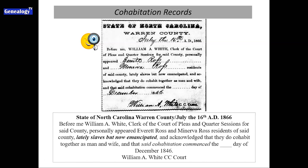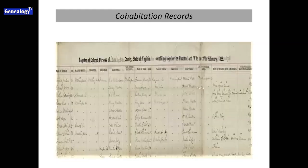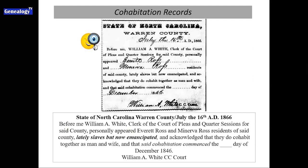After I found this document, there was no question I was on the path of researching enslaved ancestors. For those at home who might not be familiar — after the Civil War, we had a nation full of formerly enslaved people who had been living as married couples. In many cases they'd had ceremonies, jumped the broom, or were even married by clergy. But these were not legal marriages because there was no legal slave marriage. So after emancipation, you have families headed by couples who considered themselves married but had never had a legal marriage.